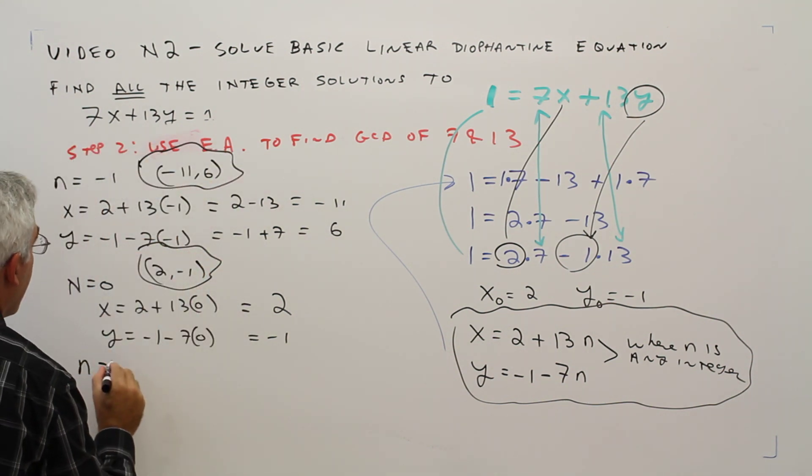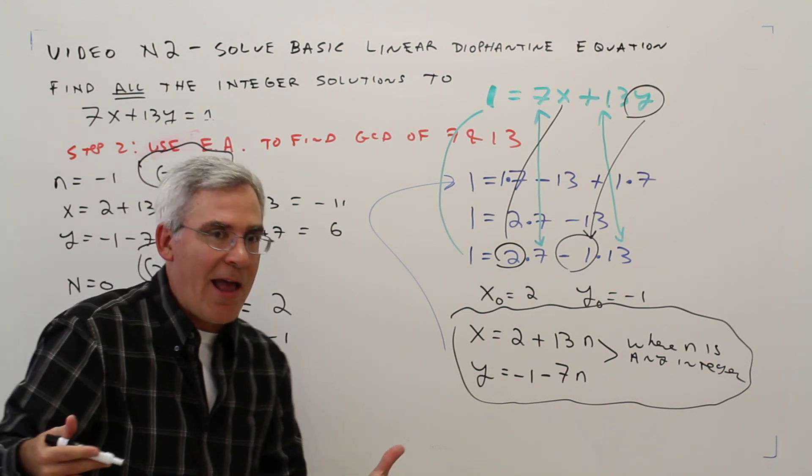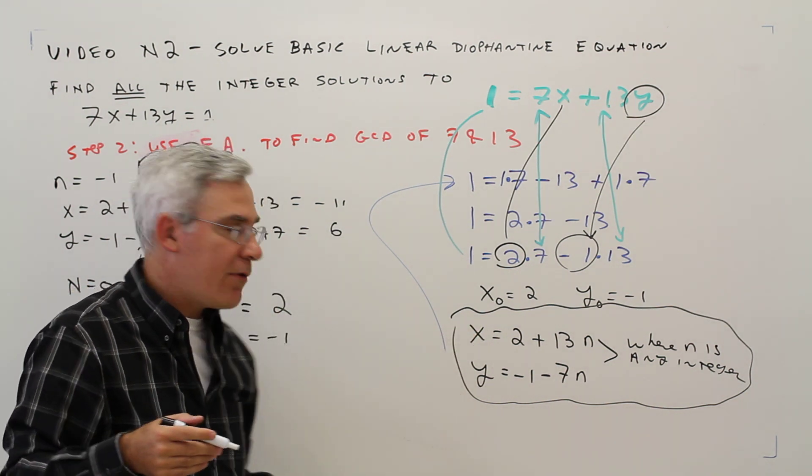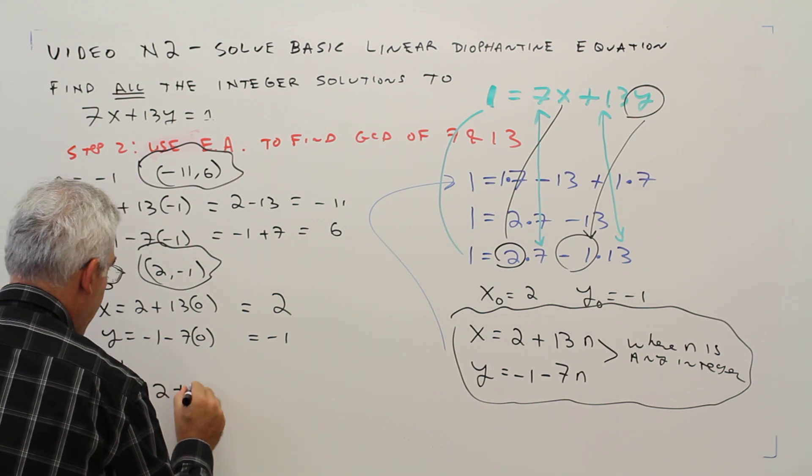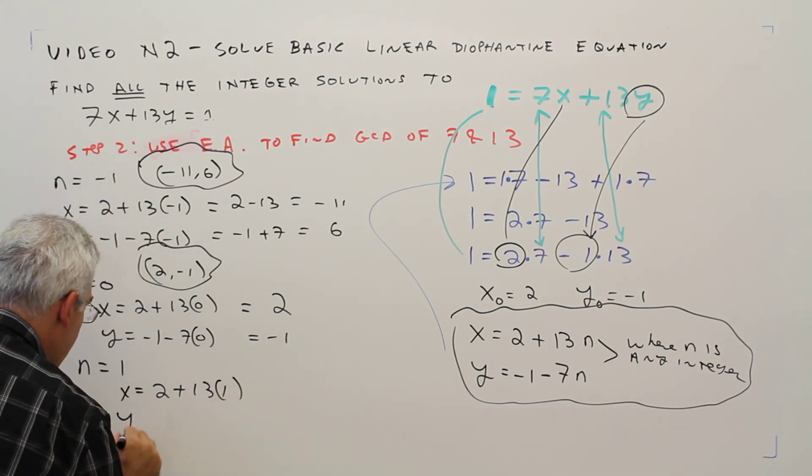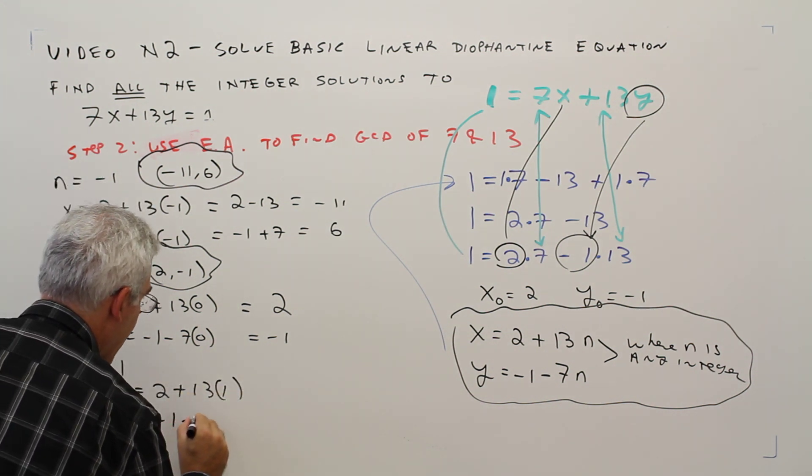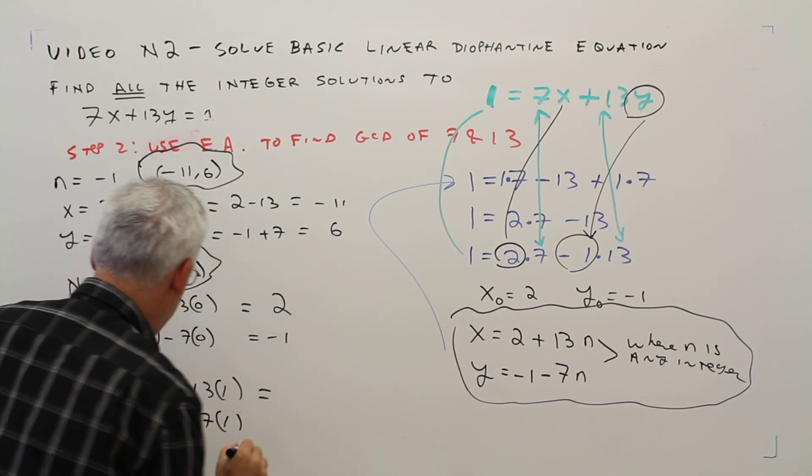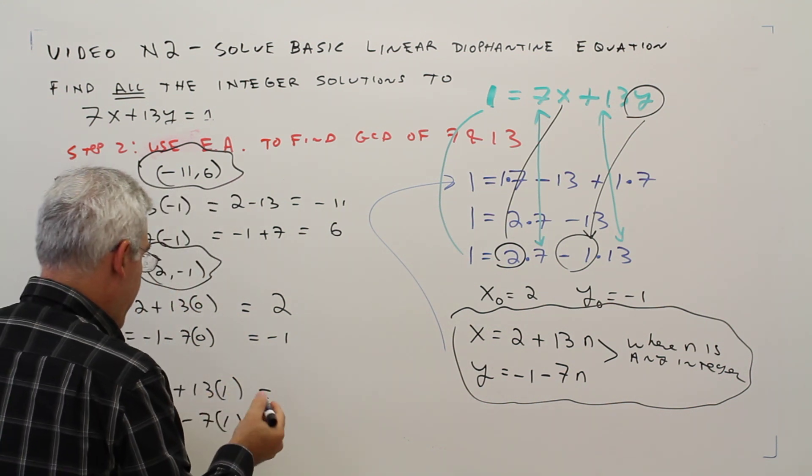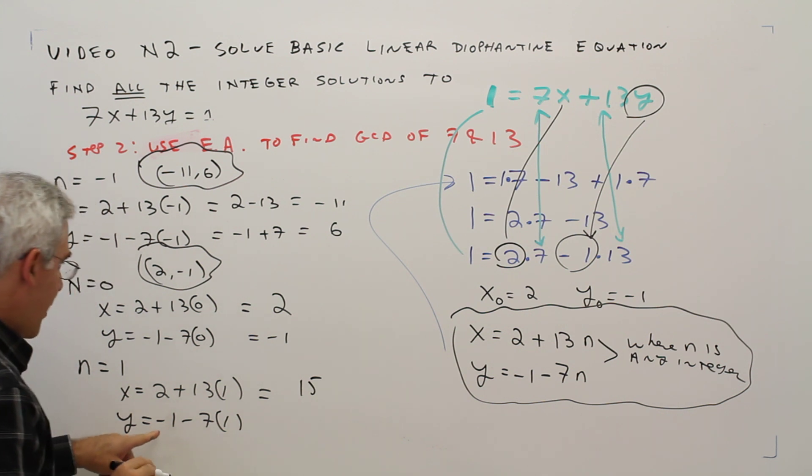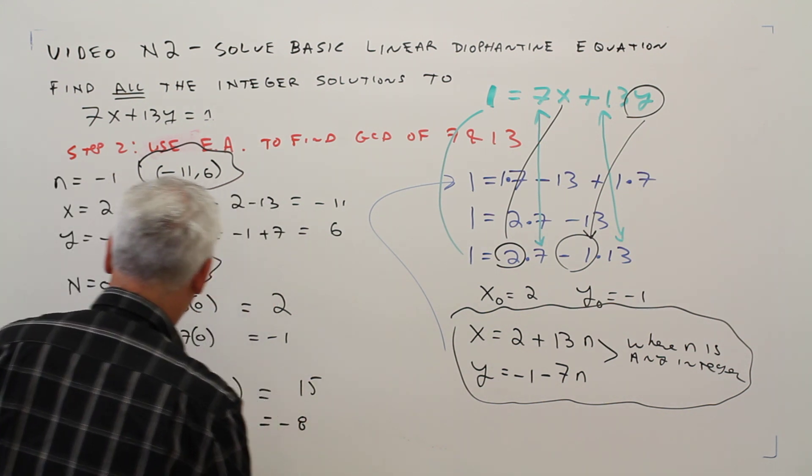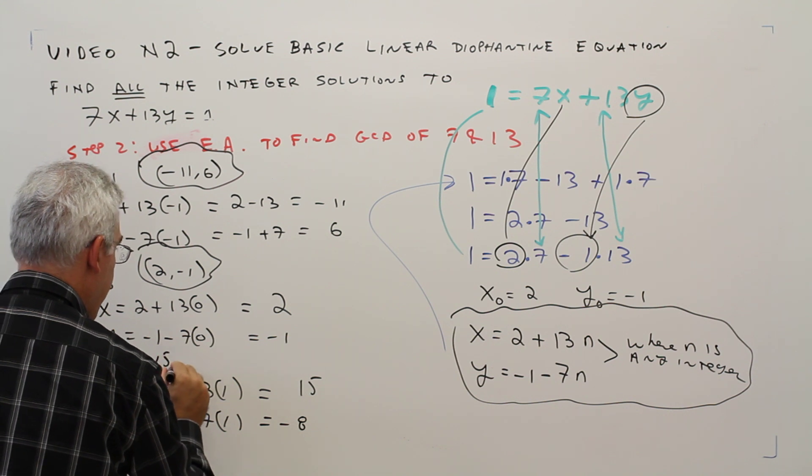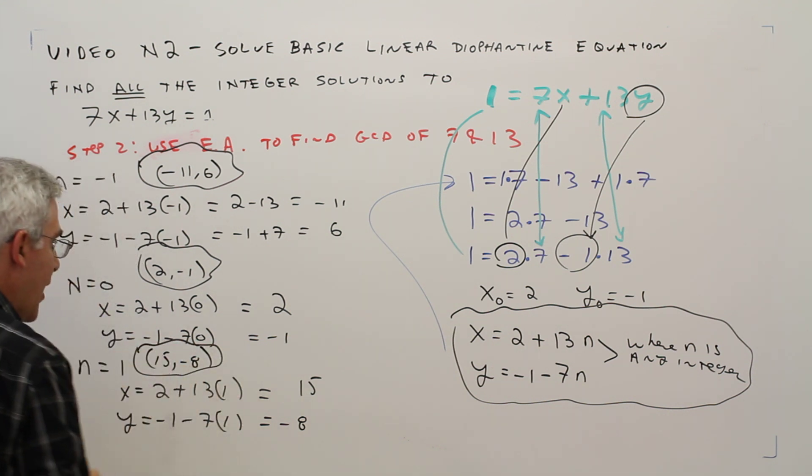And then finally if n equals 1, and you can let n be any integer I'm just going through these three. So if n equals 1, x would be 2 plus 13 times 1, y would be negative 1 minus 7 times 1, and that's going to be 2 plus 13, that's going to be 15, negative 1 minus 7, that's going to be negative 8. So that's going to be 15 by negative 8.